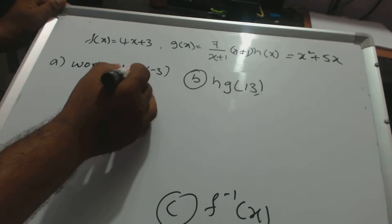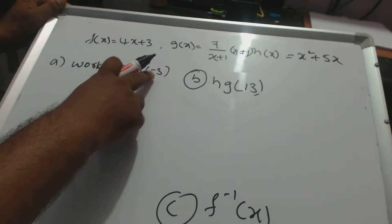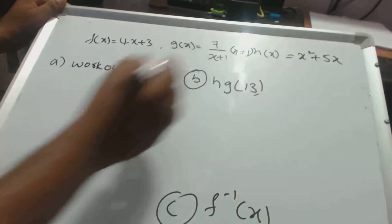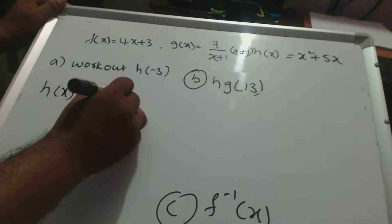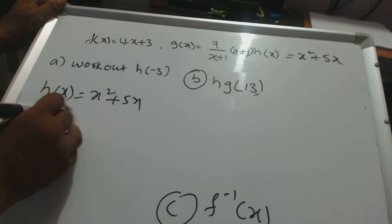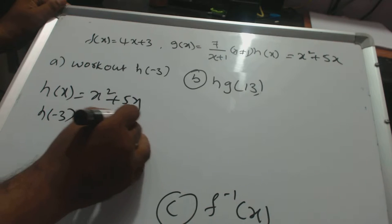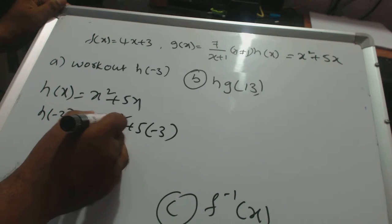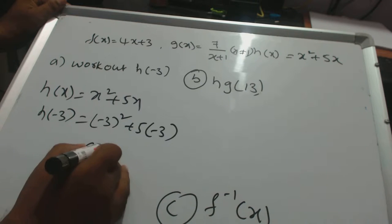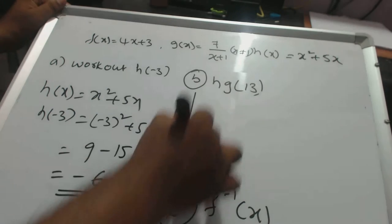So then work out h of minus 3. h of minus 3 means you have to substitute minus 3 wherever the x is placed. So what is h of x? It's equal to x squared plus 5x. Then h of minus 3, substitute wherever x is there. So minus 3 squared means just 9 minus 15, so minus 6 is the answer.